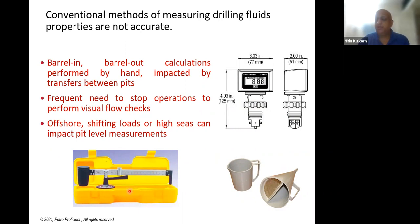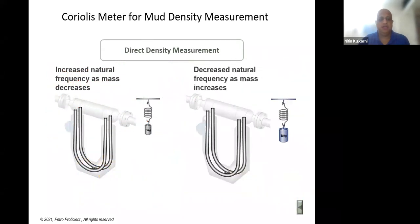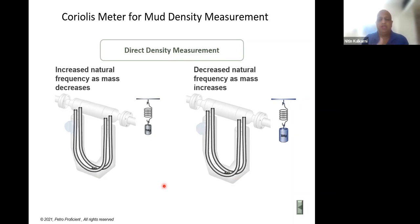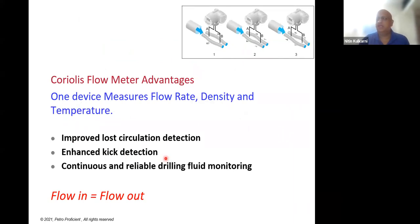The Coriolis meter gives you online, real-time readings as the mud flows through it — constantly checking density and flow rate. It gives an indication of any change in flow rate, density, and temperature of the returning fluid. From these vital signs, experienced eyes can distinguish between a kick, ballooning, or another event. The installation of this device is highly critical and required — it improves loss circulation and influx detection and provides continuous reliable fluid monitoring.